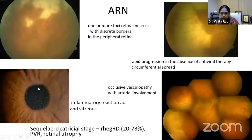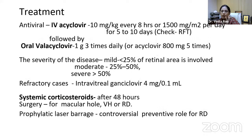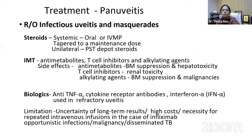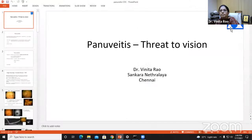Acute retinal necrosis (ARN) can present as granulomatous or non-granulomatous pan uveitis, usually unilateral but the contralateral eye can be affected within months or years. The American Uveitis Society classifies ARN as one or more foci of retinal necrosis with discrete borders in the peripheral retina, rapid progression in the absence of antiviral therapy, circumferential spread, occlusive vasculitis with arterial involvement, and inflammatory reaction in the anterior chamber and vitreous. As retinitis heals, large areas of necrosis and thinning may cause rhegmatogenous RD. Treatment: IV acyclovir followed by oral acyclovir or valacyclovir, then systemic steroids after 48 hours.